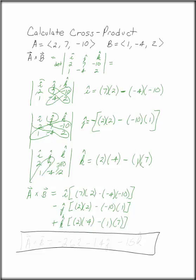This gives you minus 26 I, minus 14 J, minus 15 K. And that's the cross product of A and B.